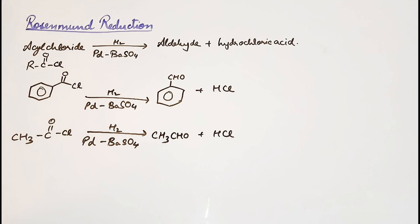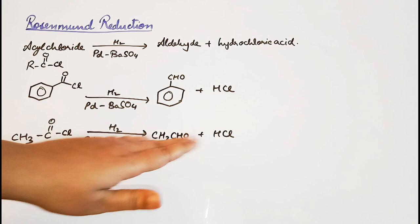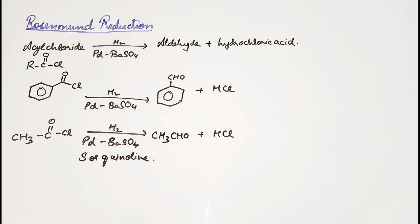And here in this reaction we will add something else: sulfur or quinoline. Generally what happens is aldehydes can further get reduced to form primary alcohol. To make sure that these do not further undergo reduction and form primary alcohols, something called a poison is added.